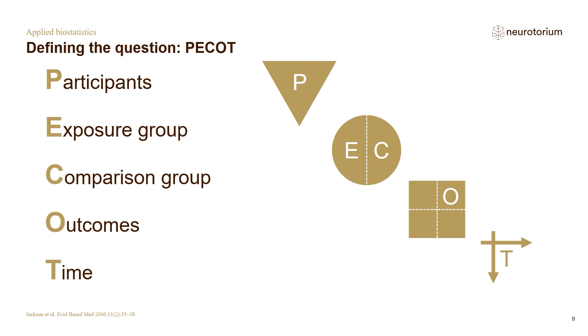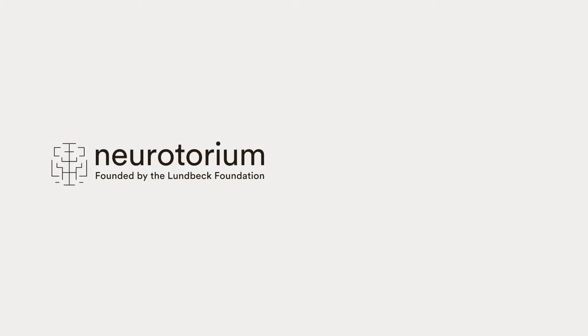Another question is how applicable the design is to your patient. When designing a study, you can organize your thinking along the PECOT structure: P-E-C-O-T. Who are the participants and how do you select them? What are your entry criteria? What is the exposure group and the comparison group? Which outcome or outcomes do you want to study? And what is the time of the intervention or follow-up? This concludes the first component of this program. The next program will talk about different designs and hypothesis testing.